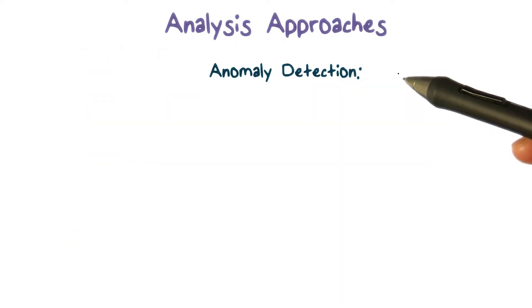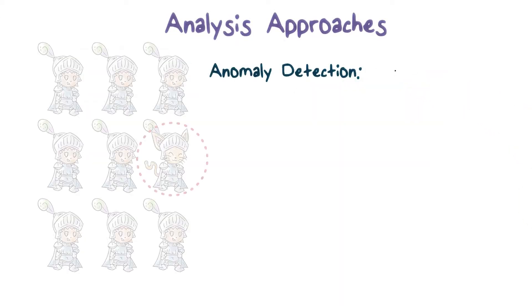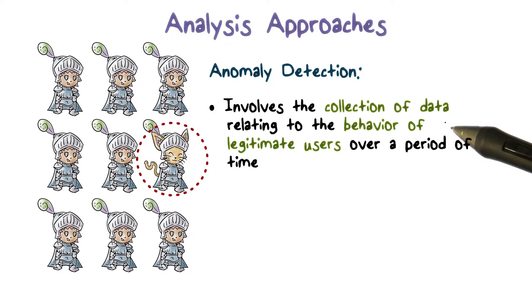There are mainly two elements in anomaly detection. The first is training or profiling. The goal is to define or characterize the normal or expected behaviors. This is accomplished by collecting data relating to normal activities and applying data analysis algorithms to construct a model.